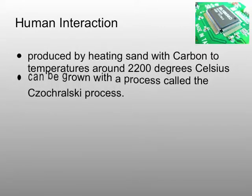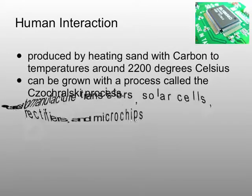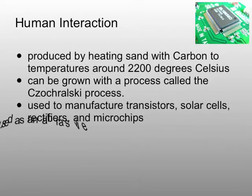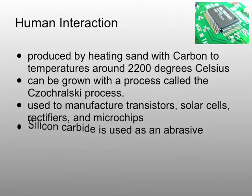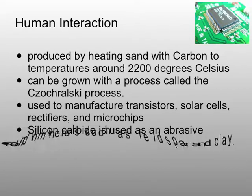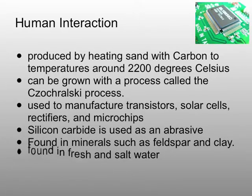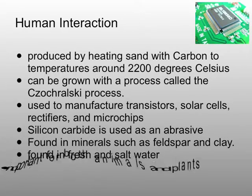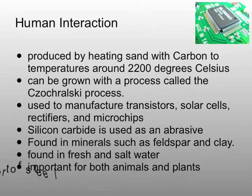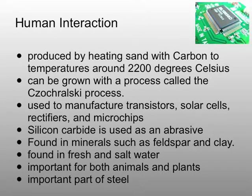It is produced by heating sand with carbon to temperatures around 2,200 degrees Celsius. It can be grown with a process called the Czochralski process. It's used to manufacture transistors, solar cells, rectifiers, and microchips.